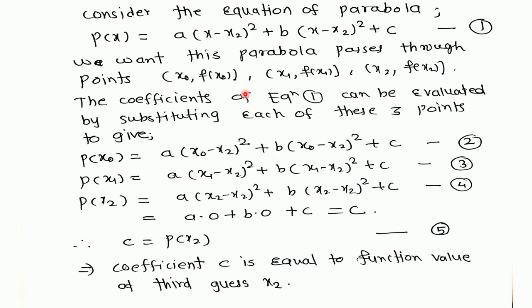The coefficients can be evaluated by substituting each of these three points. As this parabola passes through these three points, then these three points satisfy this equation. We are just putting the value of, as our parabola is p of x, substitute x is equal to x0, then we get this equation, name this equation second equation. Put x is equal to x1, we get another equation. Put x is equal to x2, we get another equation. But if you are going to put x is equal to x2, then these values are 0 and we get c is equal to p of x2. So that is the value of the function at third guess. This is the value of c.